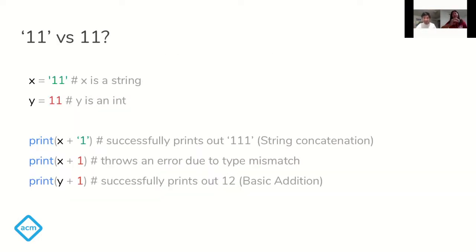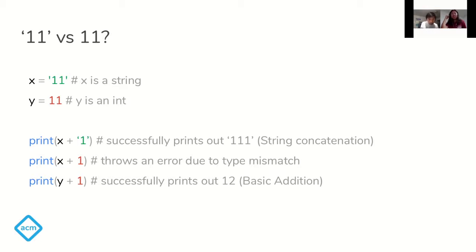Note that 11 as a string is not the same as 11 as an integer. We have two variables holding 11 — X is a string and one is an integer. If you print X plus the string "1", it will print "111" — that's string concatenation. But if you try to print a string plus an integer, Python will throw a type mismatch error. Python does not automatically cast integers into string form. If you print Y plus 1 where Y is an integer, it will correctly print 12.